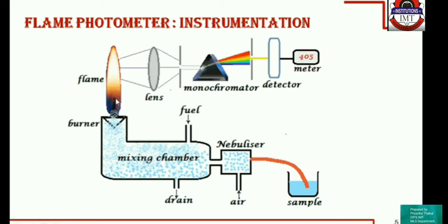When the sample is sprayed over the flame, the steps discussed in the principle happen: the solvent vaporizes leaving behind the solid residue, the solid again vaporizes and then atomizes, and the metal atom gets excited and returns back to its ground state by emitting its own characteristic wavelength. All this happens in the flame, and the emitted light passes through the lens and then through a monochromator.